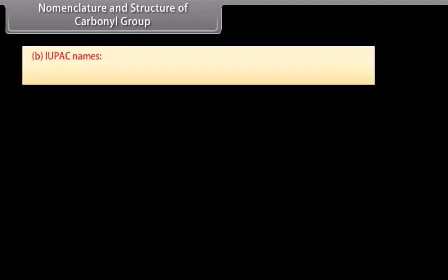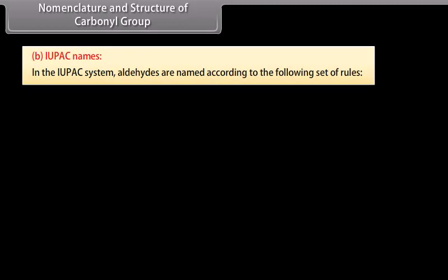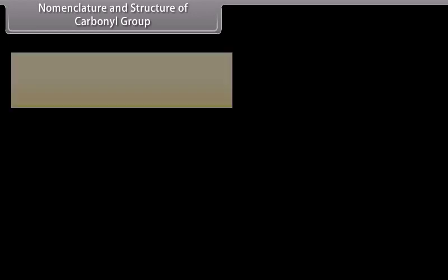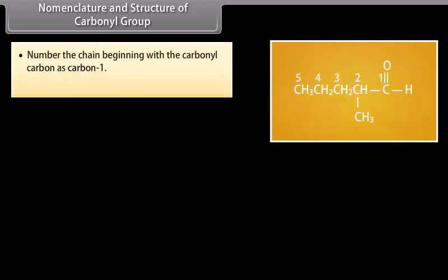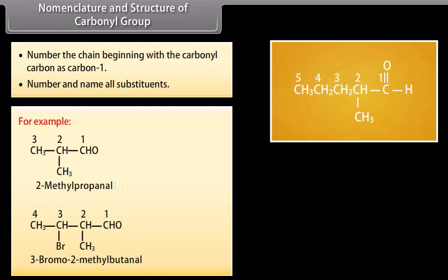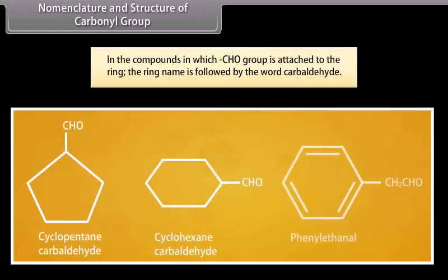IUPAC names. In the IUPAC system, aldehydes are named according to the following rules: determine the parent compound, that is the longest continuous carbon chain containing the carbonyl group; replace the final '-e' of the parent alkane with '-al'; number the chain beginning with the carbonyl carbon as carbon 1; and number and name all substituents. In compounds where the aldehyde group is attached to a ring, the ring name is followed by the word 'carbaldehyde'.